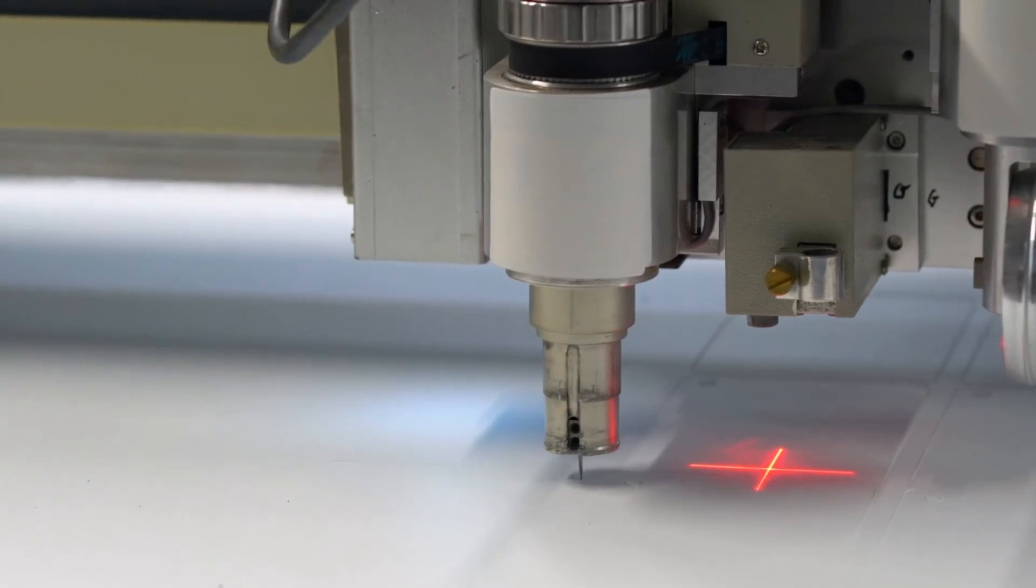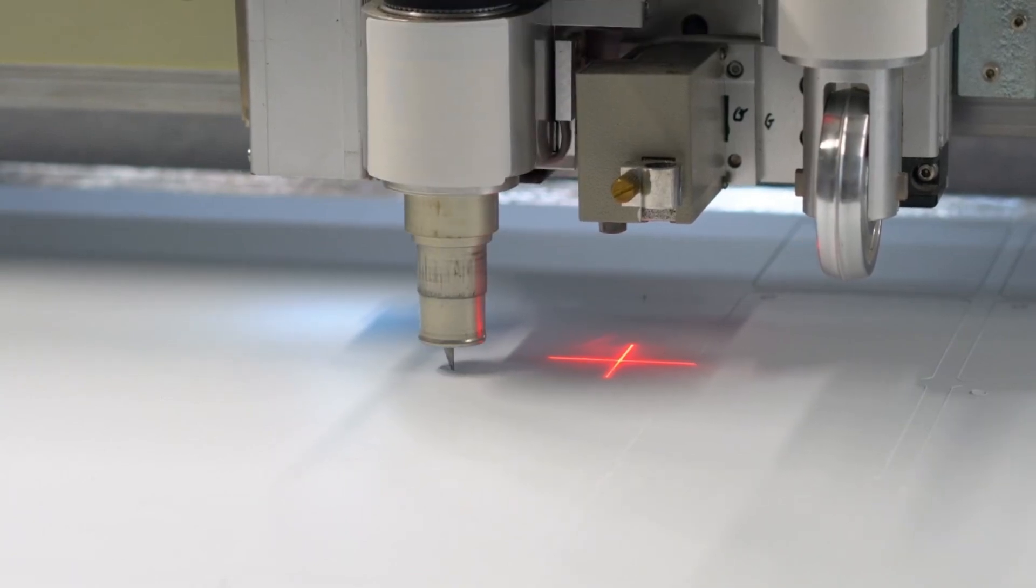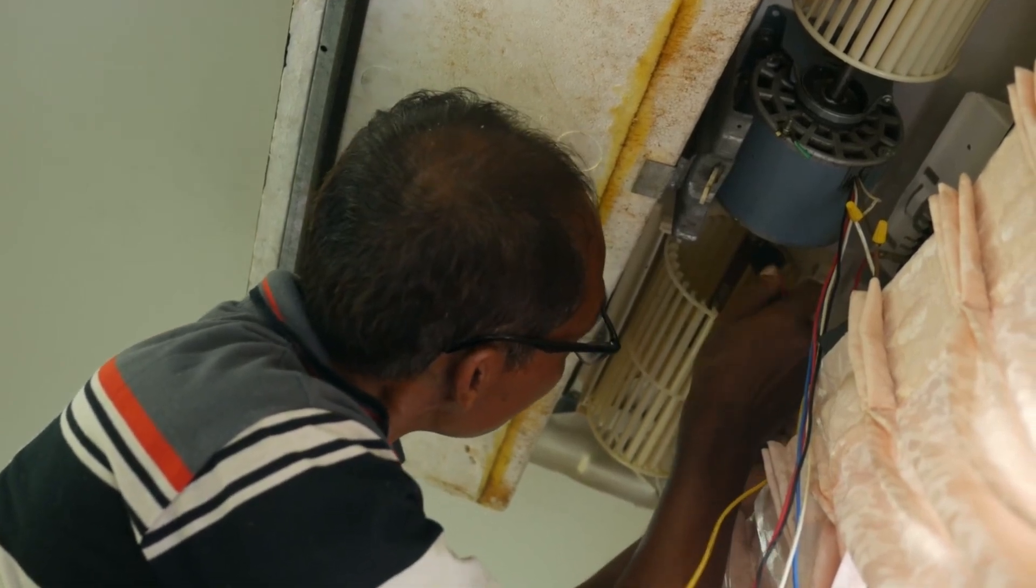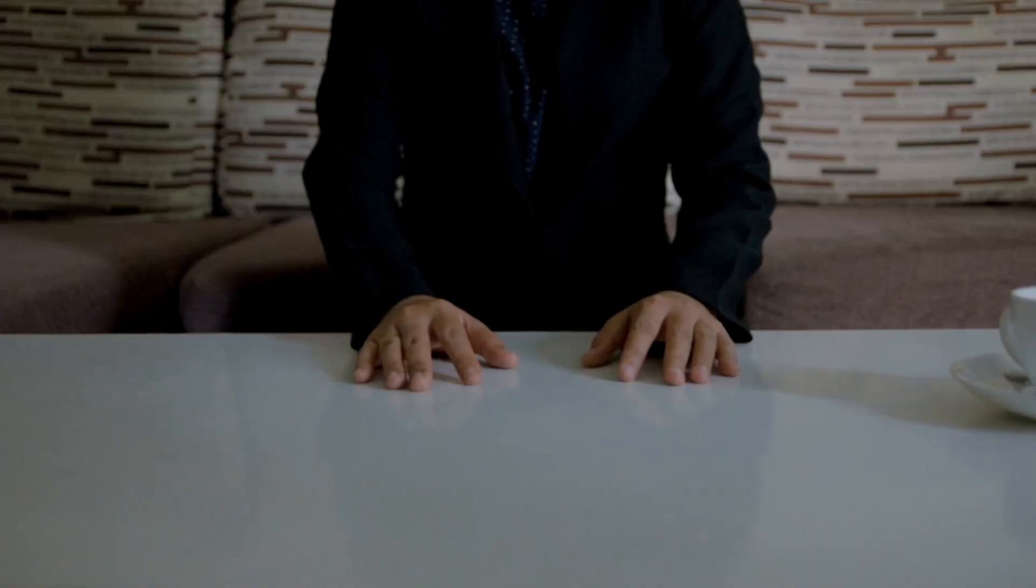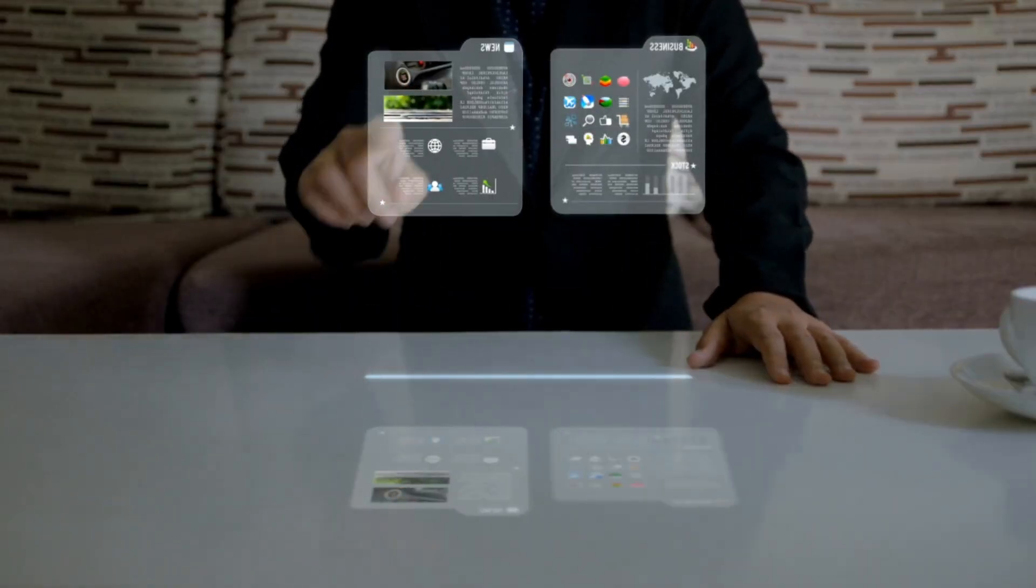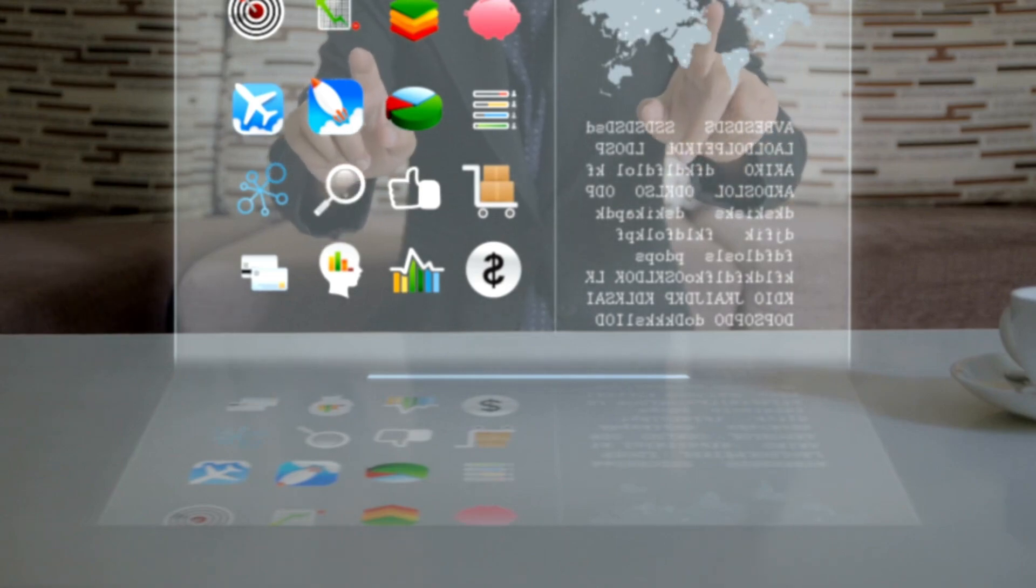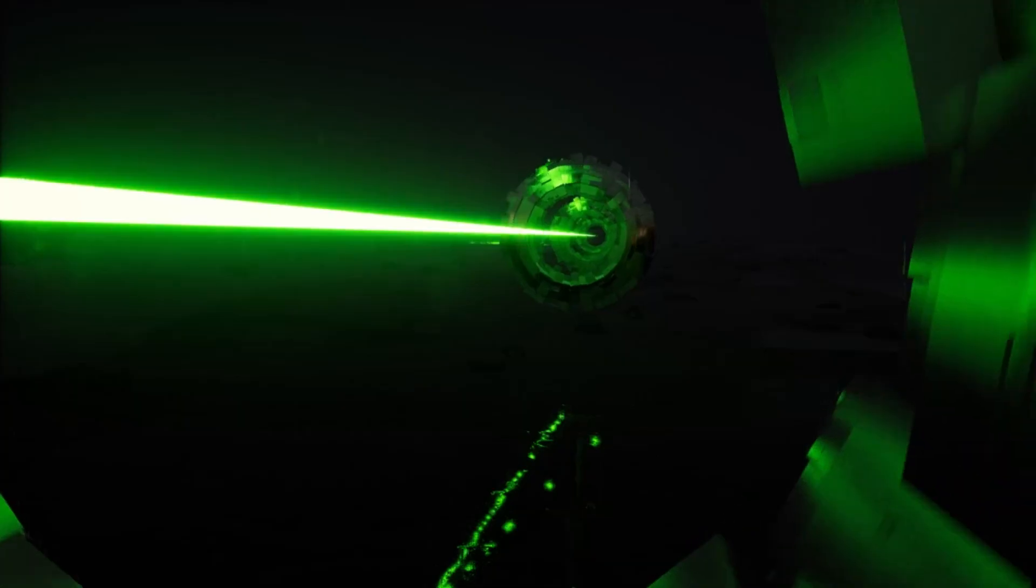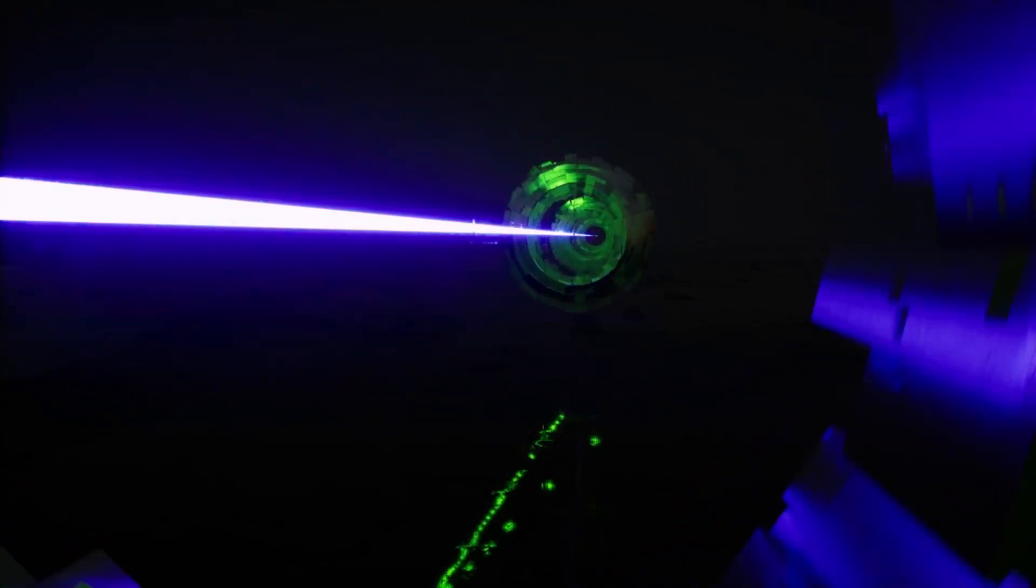Another key component of the TUSPL is the beam quality control system, which maintains the stability and precision of the laser beam. This system continuously monitors the beam and makes real-time adjustments to correct any deviations. Additionally, the beam-pointing control system ensures that the laser remains locked onto its intended target, even when operated remotely. Using an array of sensors and advanced algorithms, this system constantly tracks the laser's position and orientation, making necessary corrections to maintain pinpoint accuracy. These three core control systems—laser energy control, beam quality control, and beam-pointing control—work together to make the TUSPL one of the most precise and stable laser weapons ever developed.